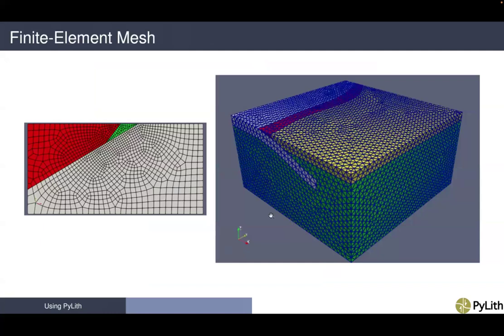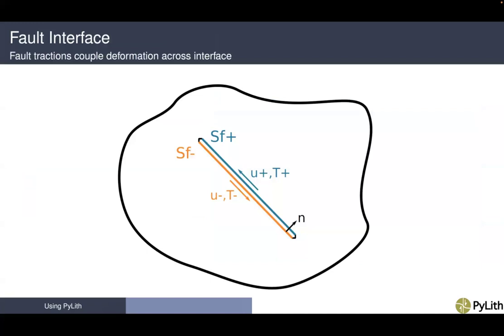These are what finite element meshes look like. On the left-hand side, we've taken an unstructured quadrilateral approach with finer discretization near reverse faults with a splay fault, coarsening the mesh with distance from the fault. On the right, a 3D subduction zone is meshed with tetrahedral cells with a uniform spatial discretization.